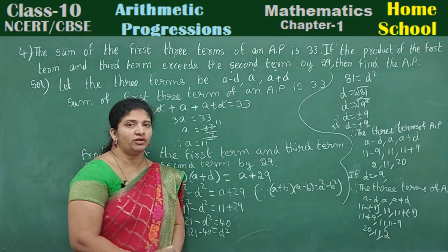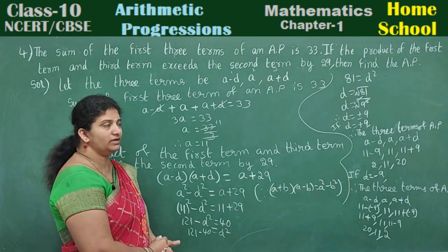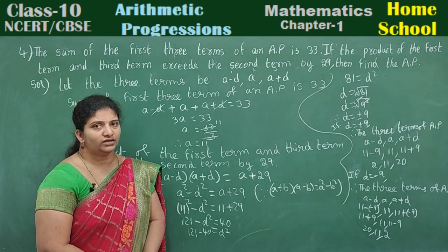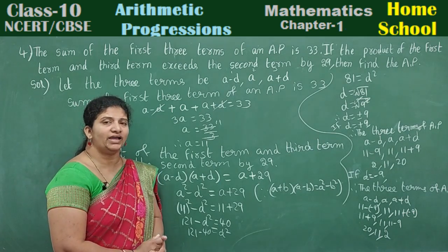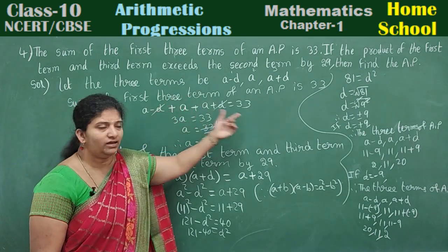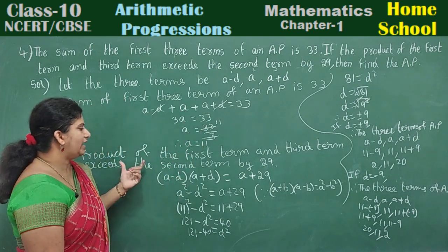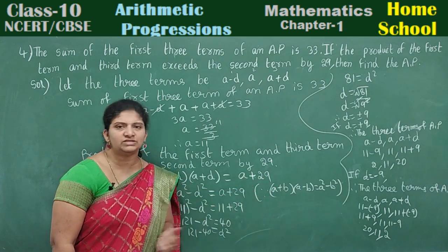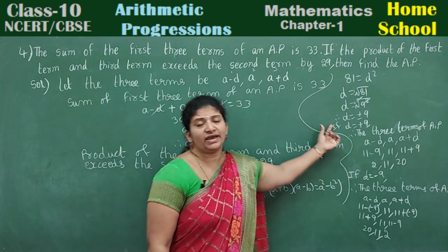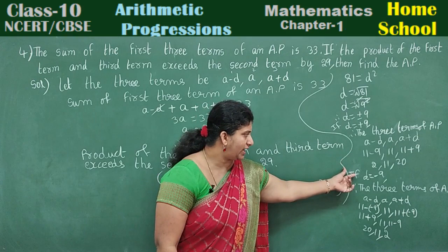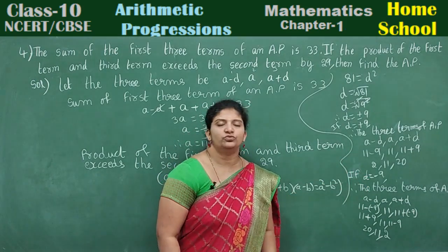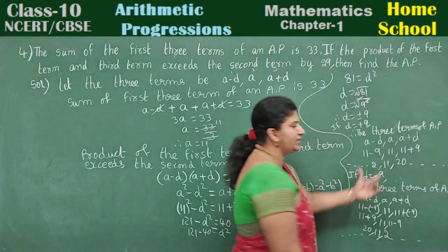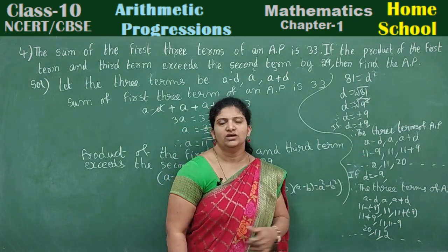Let's have a recap. There are three terms and the sum of those AP terms is 33. Let the three terms be A minus D, A, A plus D. The product of the first and third term exceeds the second term by 29, so 3A equals 33, giving A equals 11. From the product condition we get D equals plus or minus 9. If D equals plus 9, the AP is 2, 11, 20. If D equals minus 9, the AP is 20, 11, 2. You can put dots on either side to extend the sequence.